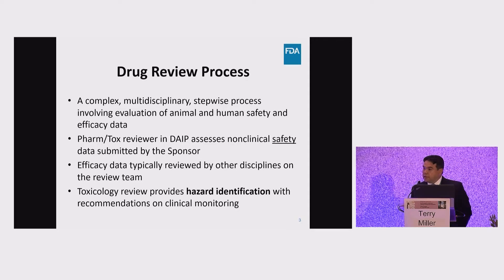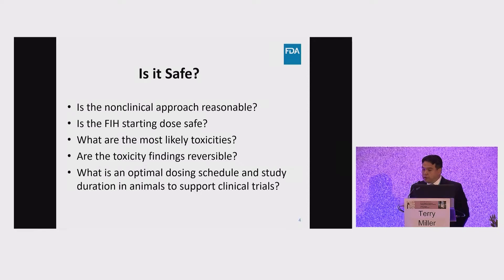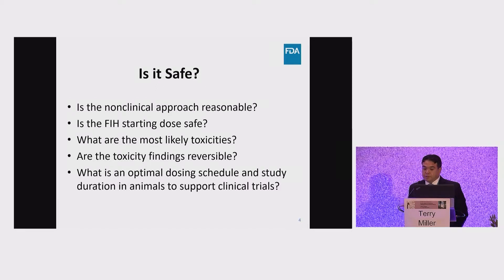The focus of the toxicology review is to provide hazard identification with recommendations on clinical monitoring. In our assessment of non-clinical studies to support first-in-human dosing, we typically ask: Is the non-clinical approach reasonable? Is the first-in-human starting dose safe? What are the most likely toxicities expected in the clinic based on animal findings? Are these toxicities reversible? And has the sponsor identified an optimal dosing schedule and study duration in animals that adequately supports the clinical trials?